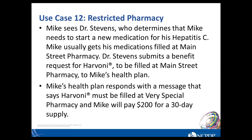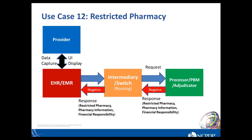Use case twelve is the restricted pharmacy use case. Mike sees Dr. Stevens, who determines Mike needs to start a new medication for his Hep C. He usually gets medication at Main Street Pharmacy. Dr. Stevens submits a benefit request for Harvoni to be filled at Main Street Pharmacy. The plan responds that Harvoni must be filled at Very Special Pharmacy, and Mike will pay $200 for a 30-day supply. Situations covered include patient lock-in to a specific pharmacy, specialty pharmacy requirements, or mandatory mail order. The restricted pharmacy message, pharmacy information, and financial responsibility are all required.